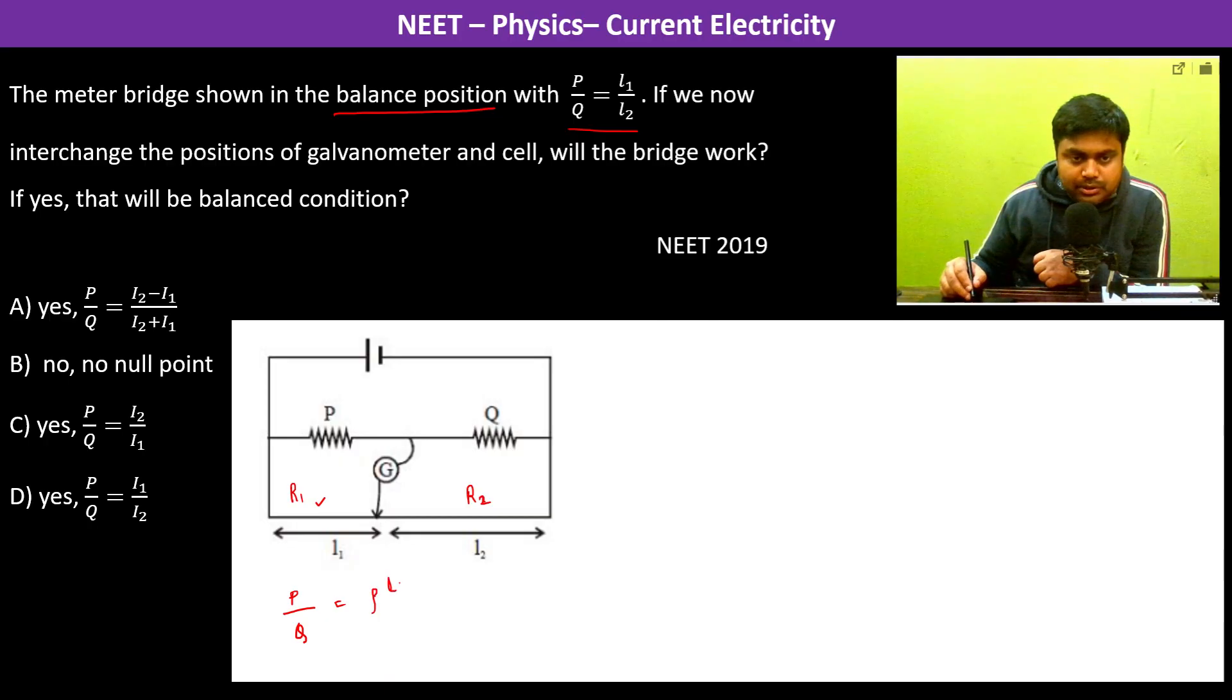This is basically rho L1 by A divided by rho L2 by A. The rho and A cancel out, so this is L1 upon L2.